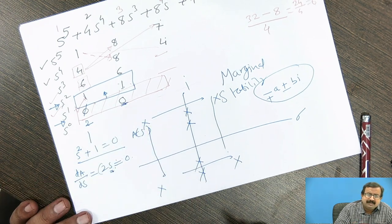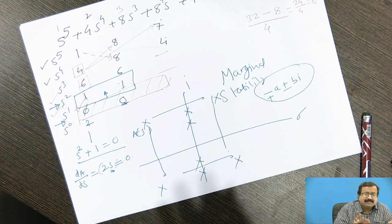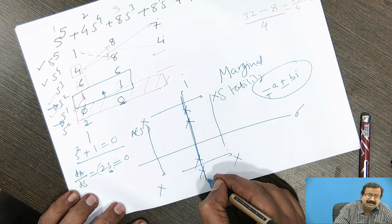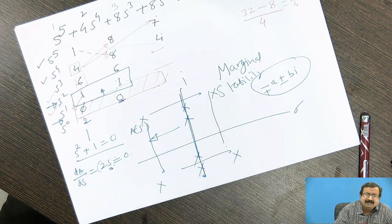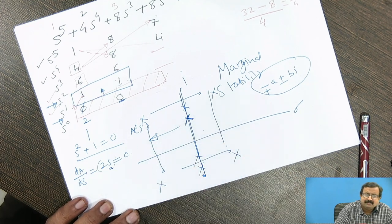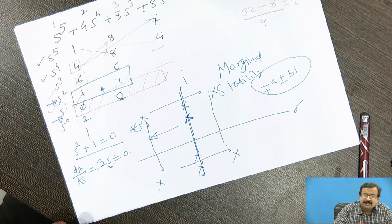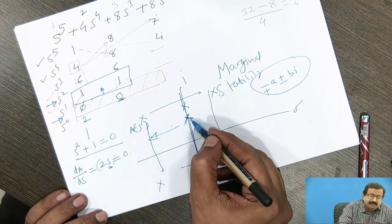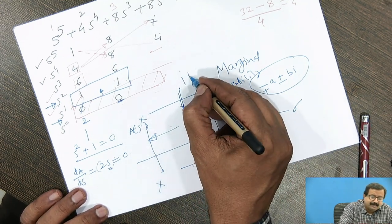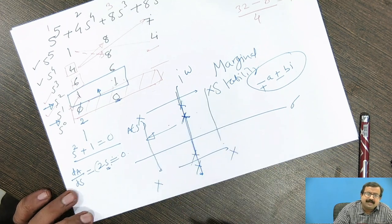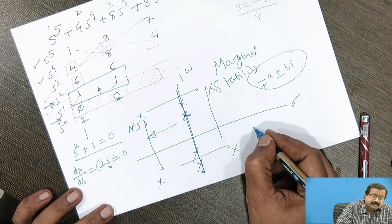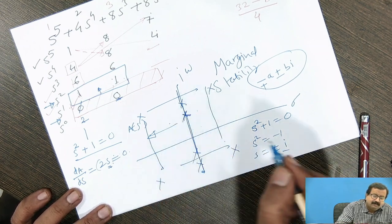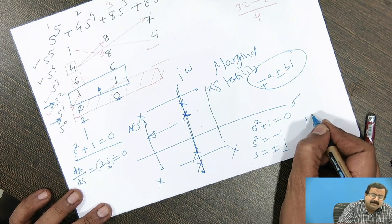After completing the table, we can see that no root is lying on the right-hand side; roots are lying on the imaginary axis and the remaining roots are on the left-hand side. Because the roots are on the imaginary axis, the system is marginally stable. If the roots move to the right, it is unstable; if they move to the left, it is stable. On the imaginary axis, it is on the verge of instability. To find the frequency, substitute s² + 1 = 0, giving s² = −1, so s = ±i, meaning the frequency is 1 radian per second.